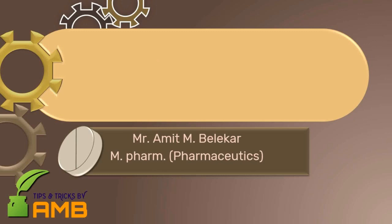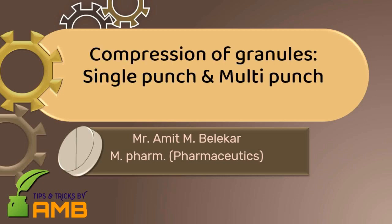In the previous session, we had discussed the first step of manufacturing of tablets, i.e. preparation of granules. In this presentation, we are going to discuss about the second step of manufacturing of tablets, i.e. compression of granules. We are discussing compression of granules in various parts. In this presentation, we are discussing the first part, i.e. single punch tablet machine and multi-punch tablet machines.